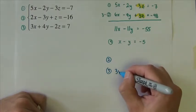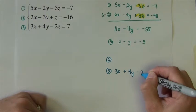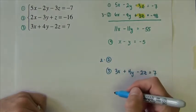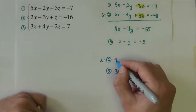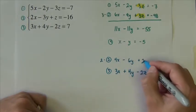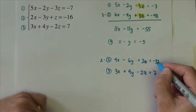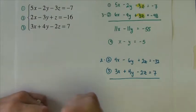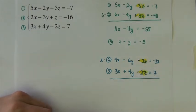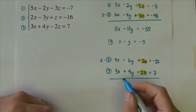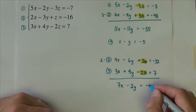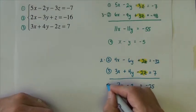I'm going to take equation three as it is. I'm going to take equation two times two, so that gives 4x minus 6y plus 2z equals negative 32. I'm going to add these together. Notice again by design the z's cancel out as they're supposed to. We get 7x minus 2y equals negative 25. I'll call this equation five.